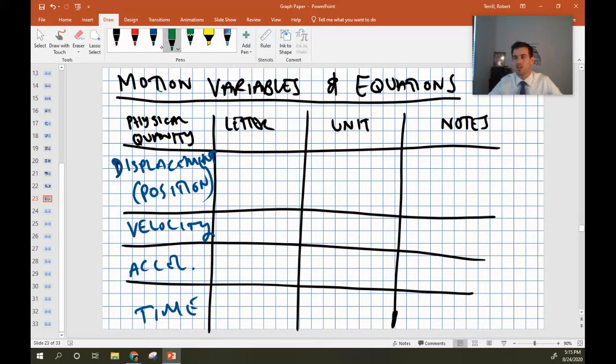Each one of these has its own letter, so we will always use x to represent the position in the horizontal direction or y to represent the position in the vertical direction. Velocity is represented with a v, acceleration is represented with a lowercase a, and time is represented with a lowercase t. So anytime you see those variables you'll know what they mean.